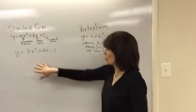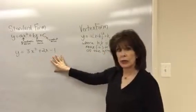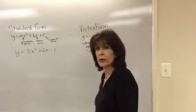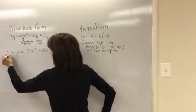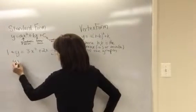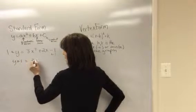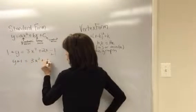So the first step is to move the constant term over to the other side of the equation, and we do that by adding one to each side. And now we have y plus one equals three x squared plus two x.